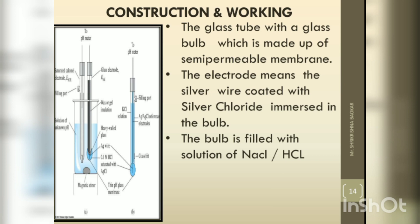The glass tube is made up of a semi-permeable membrane. The electrode consists of a silver wire coated with silver chloride immersed in the bulb, which is filled with a solution of NaCl or HCl.